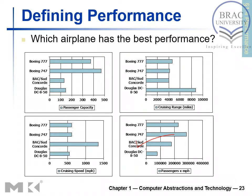This graph gives you the summary of the performance, and it shows that the Boeing 747 gives you the best performance if you compare passenger capacity, cruising range, and cruising speed. Comparing these factors, you would see that Boeing 747 gives the best performance, though it may not have the highest cruising range or the longest cruising speed individually.